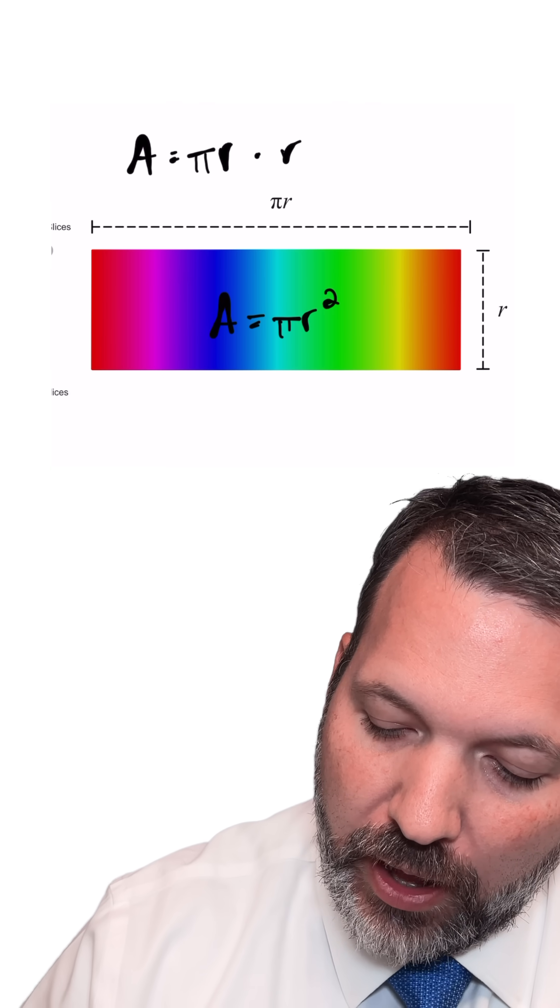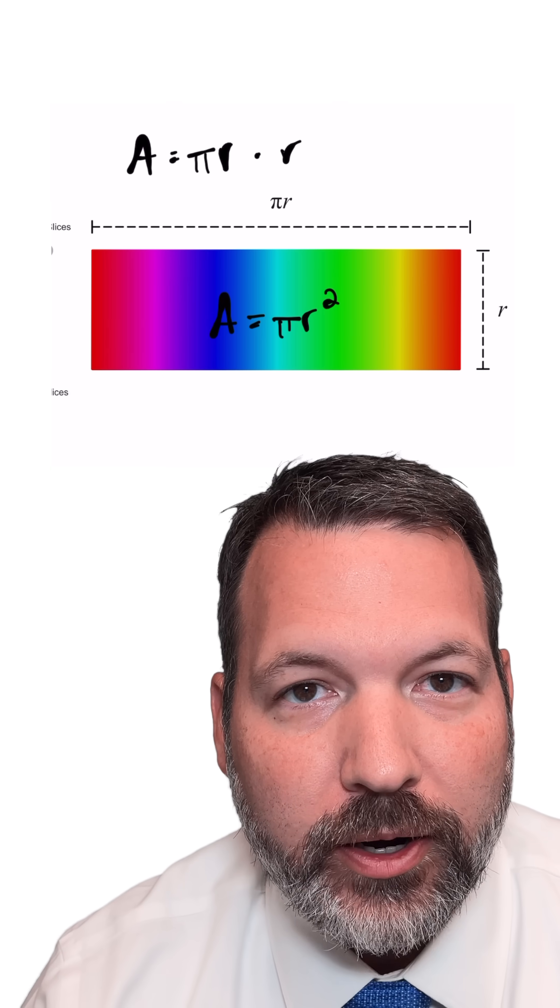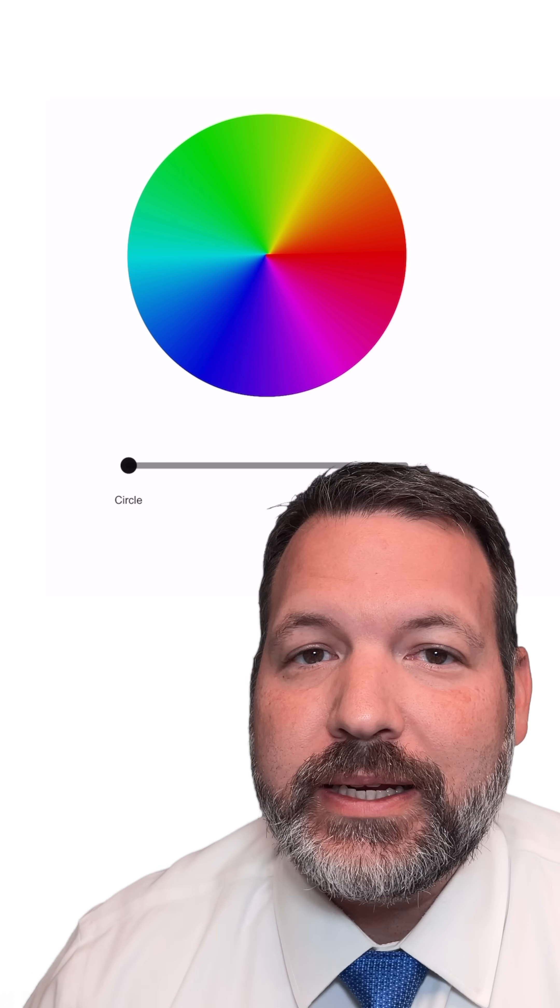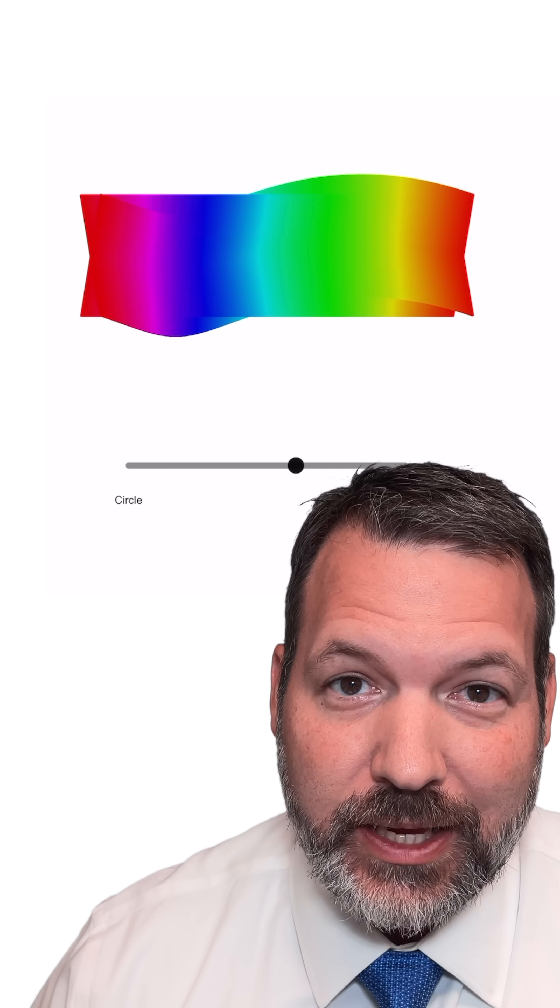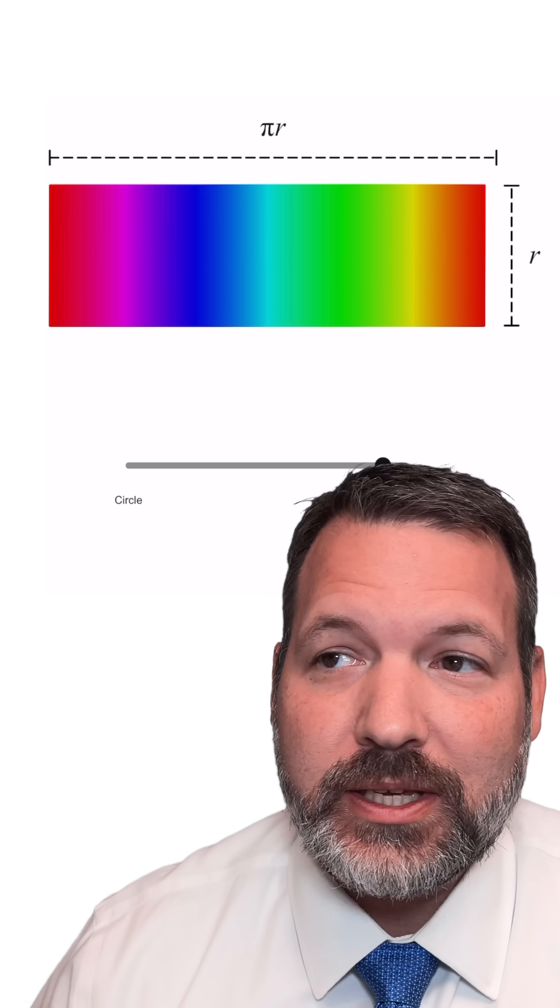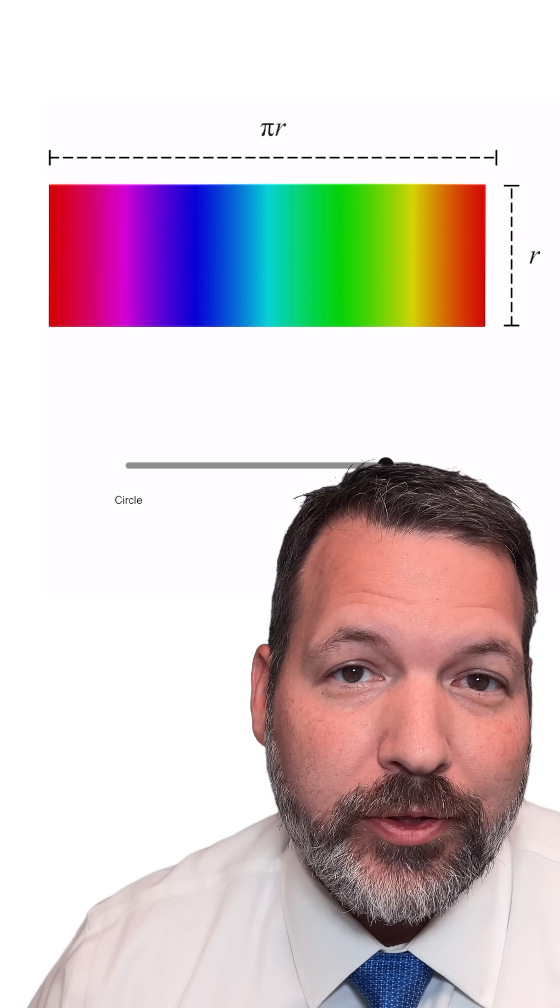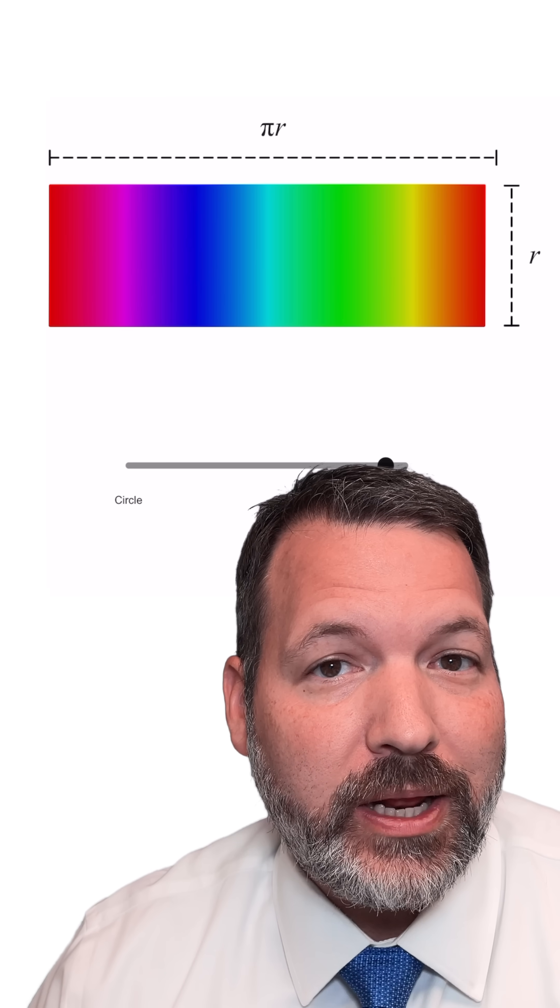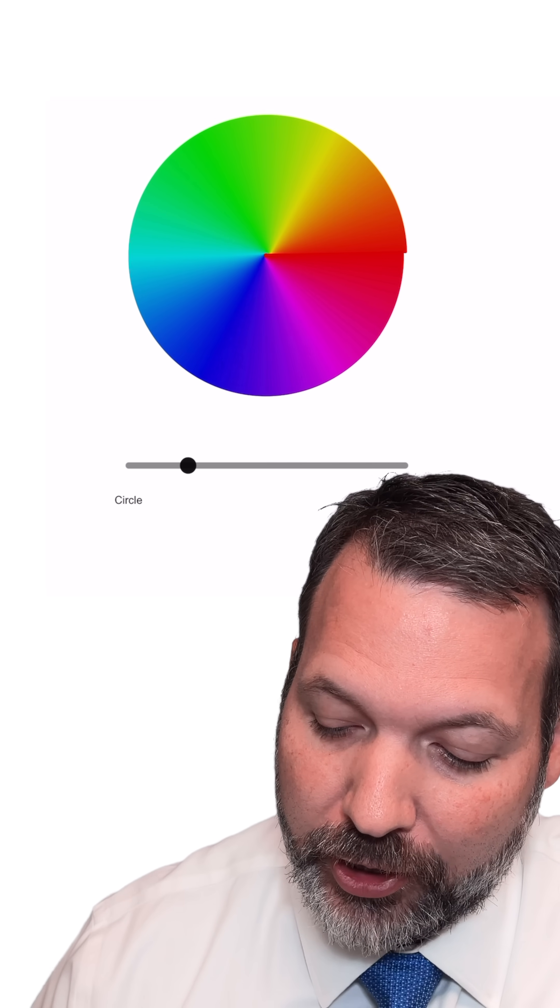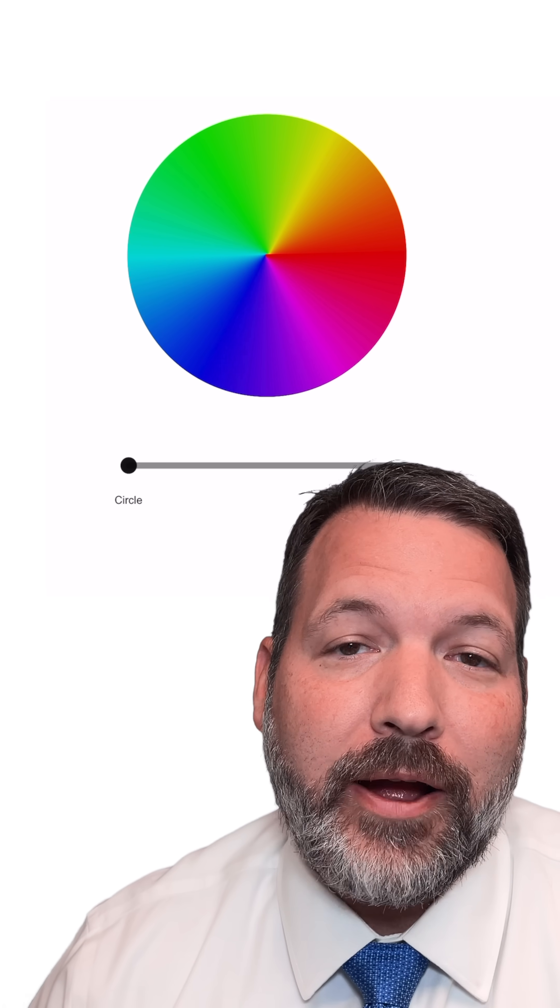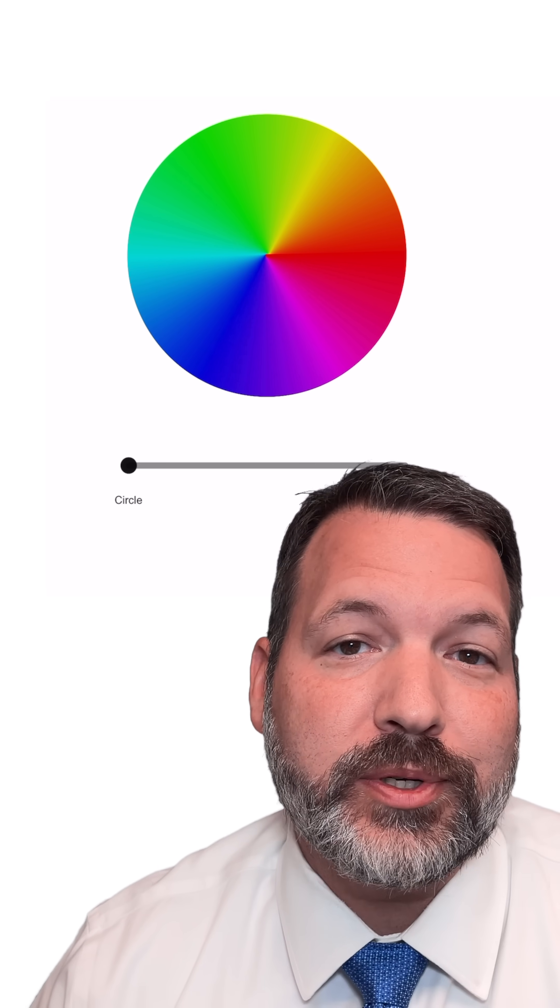This is actually one of the fundamental ideas behind calculus, that we can take curvy things and figure out lengths, areas, other features about those curvy things by approximating them with straight things. We just have to let the straight things get smaller and smaller, and the smaller they get, the better our approximation will actually represent reality.